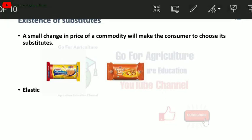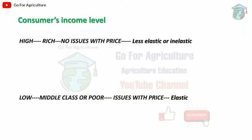The next factor is consumer's income level. There are two cases: high income and low income. For high-income (rich) consumers, a change in price doesn't matter much because they have plenty of money. Even if the iPhone price goes from 50,000 to 2 lakh, a rich person would still buy it. So for high income, demand is less elastic or inelastic.